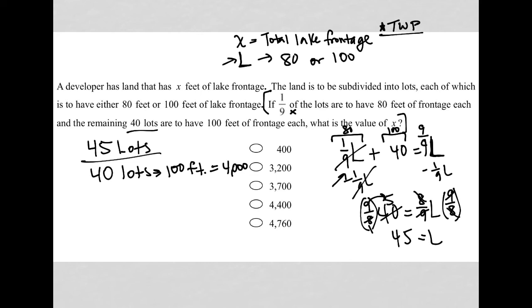Now, one ninth of the 45 lots, well that's five. 40 plus 5 is 45. So five of the lots have 80 feet. So what's the total amount of lake frontage represented by those five lots? It'll be 5 times 80, which is 400. So all together, I have 4,400 feet of lake frontage.